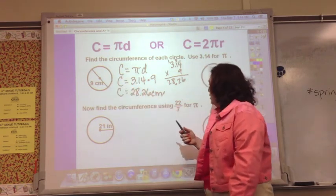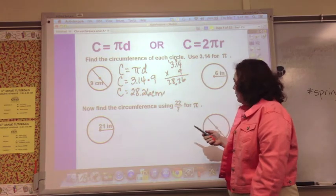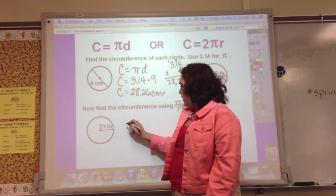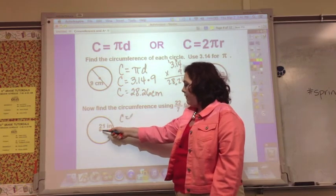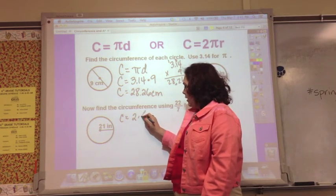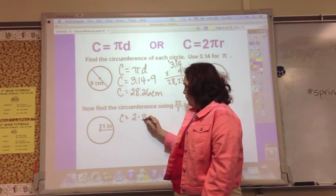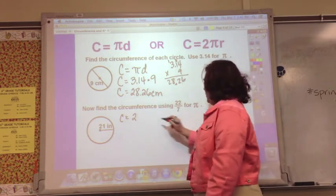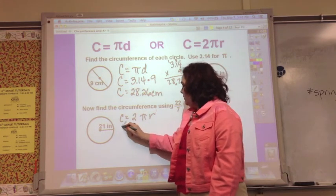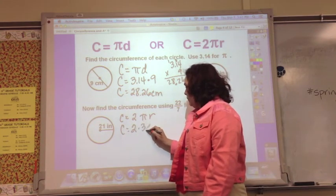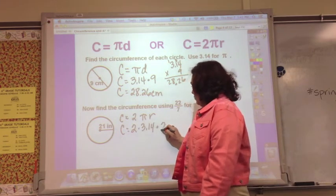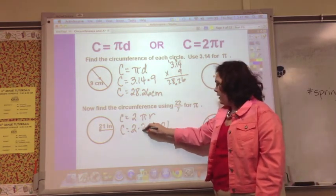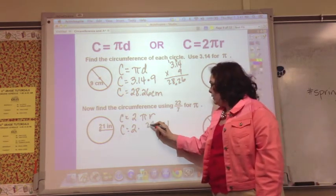Now I'm going to find the circumference using 22 over 7 for pi. I've got the radius, so I'm going to use the formula 2 pi r. C equals 2 times pi times the radius of 21. It said use 22 over 7, so I need to change that to 22 over 7.